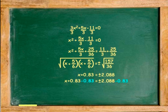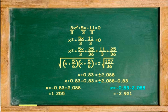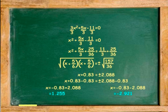Subtract 0.83 from both sides to move 0.83 to the right. x has two values: negative 0.83 plus 2.088, and negative 0.83 minus 2.088. This gives x equals 1.255 and x equals negative 2.921.